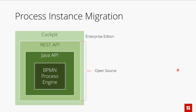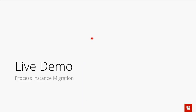This is where the new process instance migration feature kicks in. Let me point out what is open source and what is not. The core engine migration implementation is open source, exposed via Java API and REST API. However, the cockpit UI for process instance migration is not open source — that's one more reason to go for the enterprise edition. Now let me quickly show how it works.